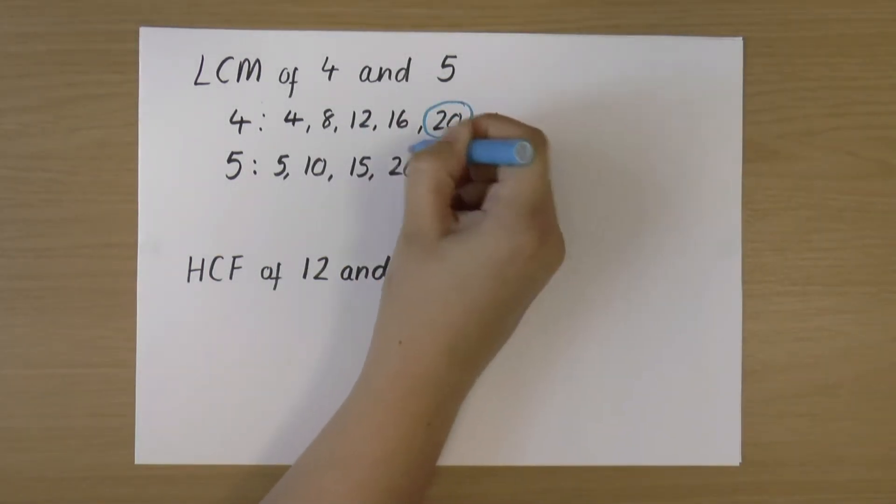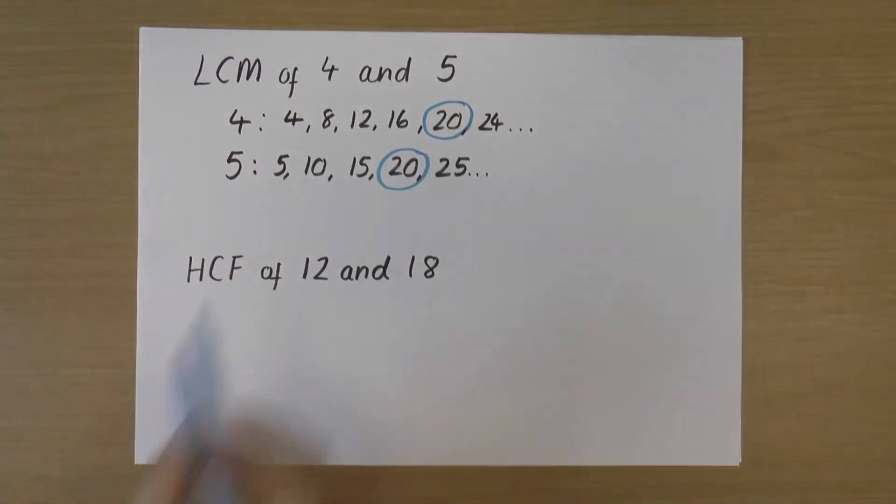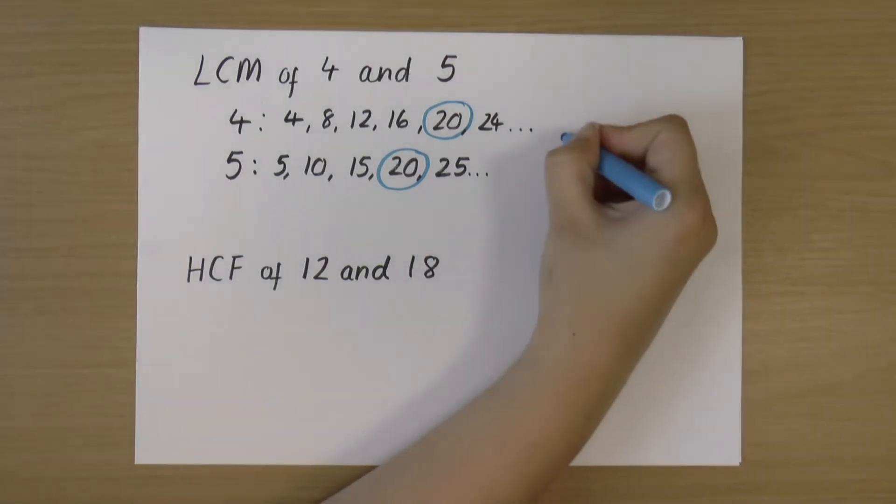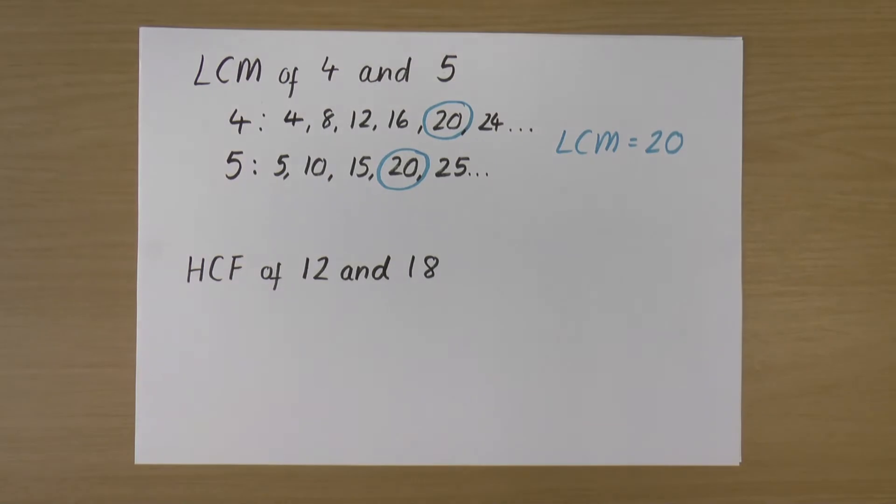So the lowest number in both of these lists is 20. There is no number lower that's in both, and therefore our lowest common multiple is 20.